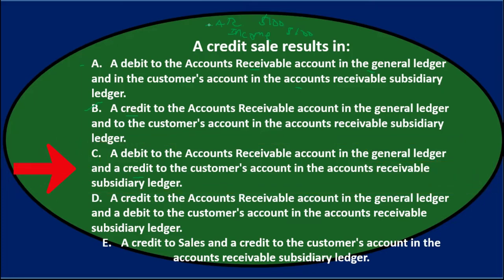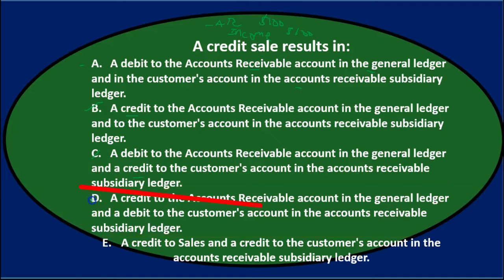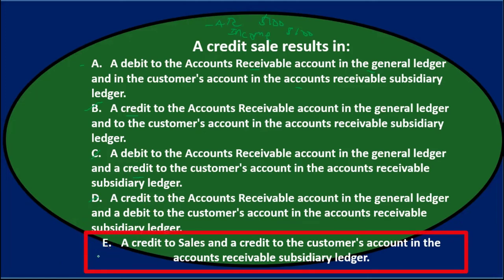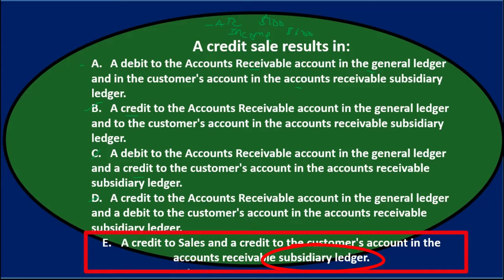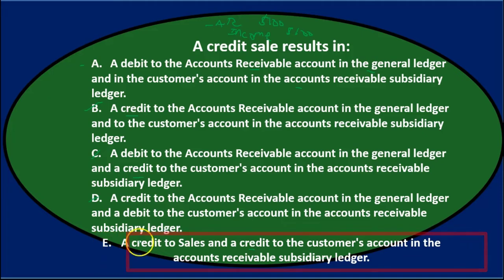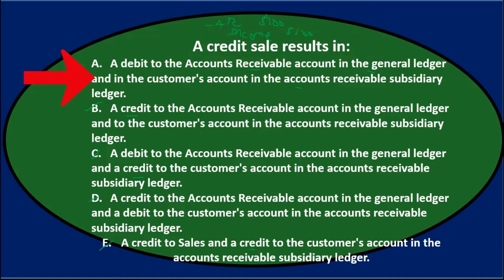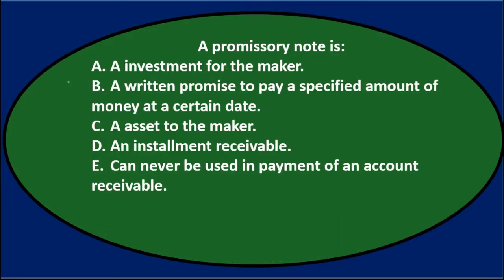The subsidiary ledger is essentially the same as the general ledger entry, just ordered by customer rather than by date. Option D says a credit to AR — that's not correct. Option E says a credit to sales and a credit to the customer's account in the subsidiary ledger — we do credit sales, but we debit accounts receivable, which flows to both the GL and the subsidiary ledger. So option A is the correct answer.